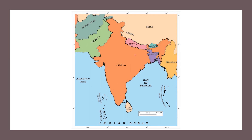There are several neighbors of India. To the north we have China, Nepal and Bhutan. To the east, Bangladesh and Myanmar. To the west, Afghanistan and Pakistan. And to the south, we have an island country, Sri Lanka, which is separated by the Palk Strait.